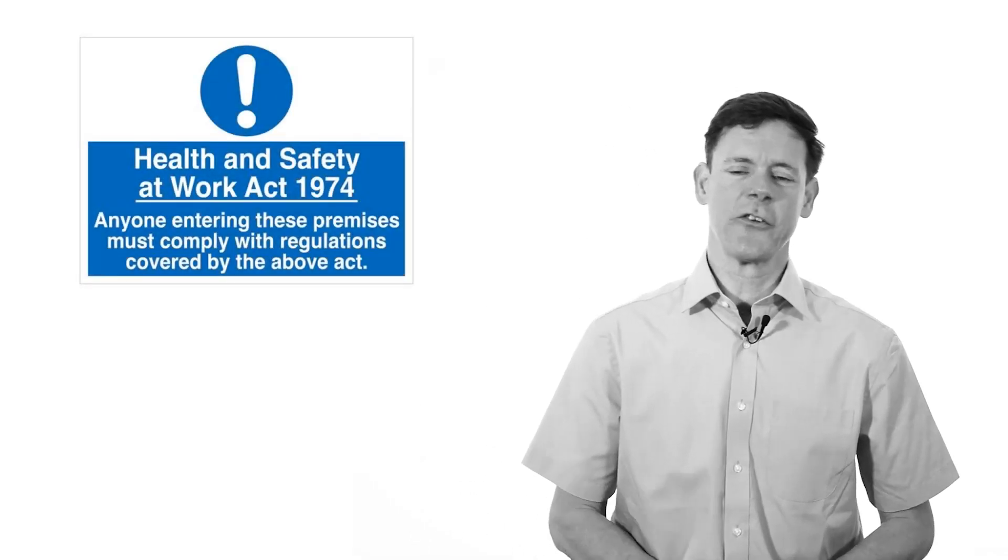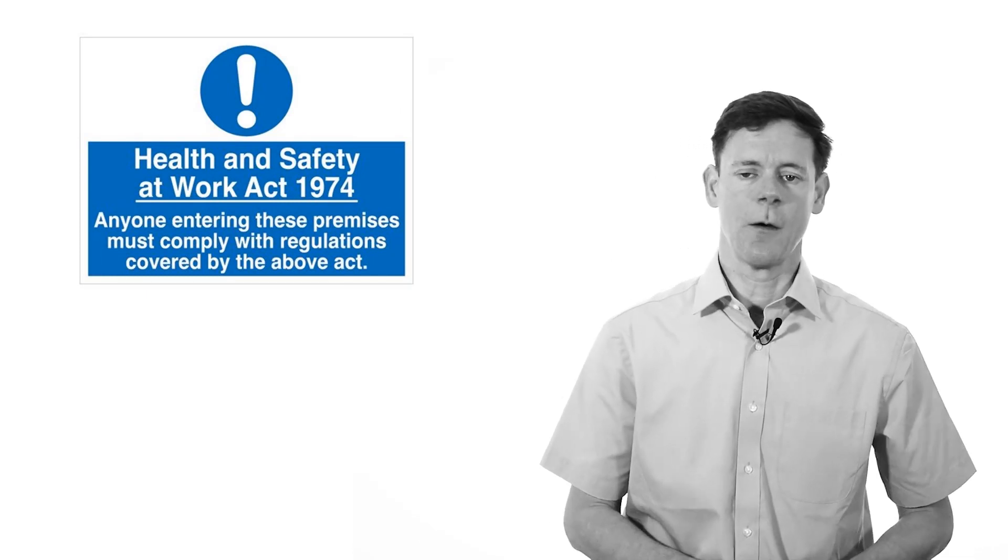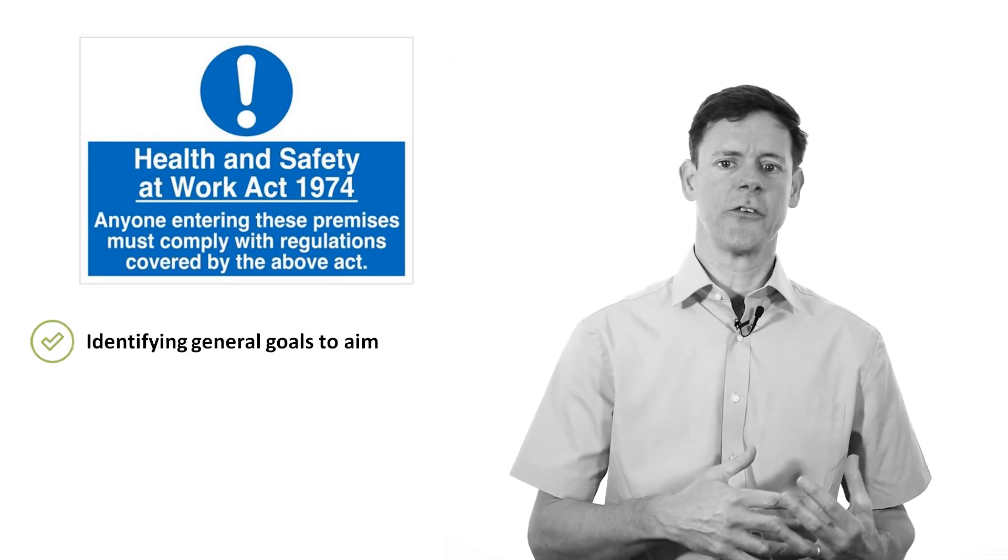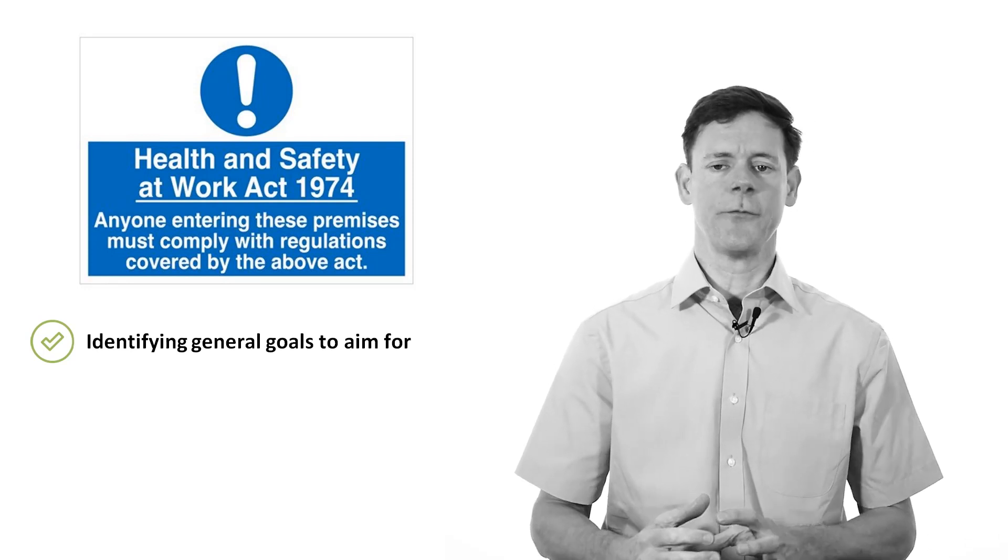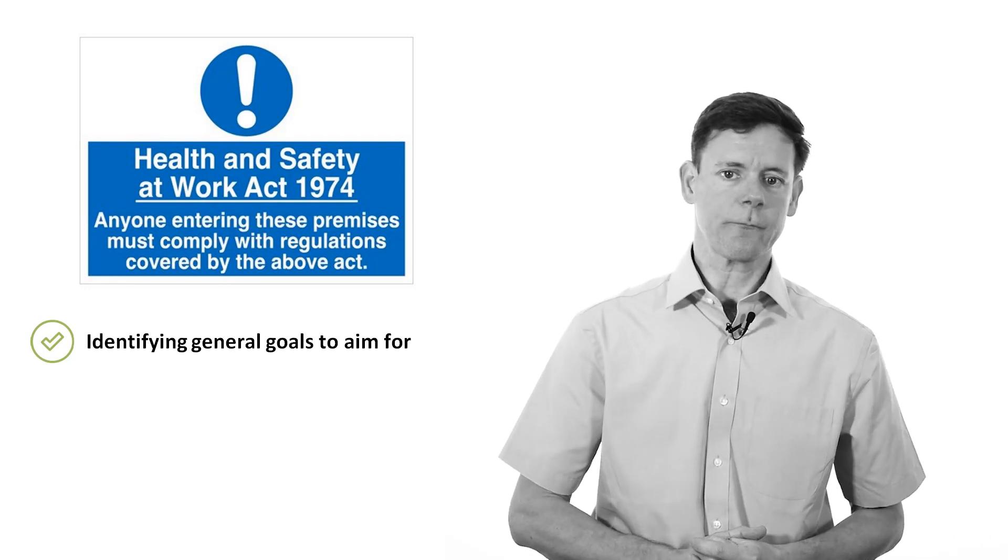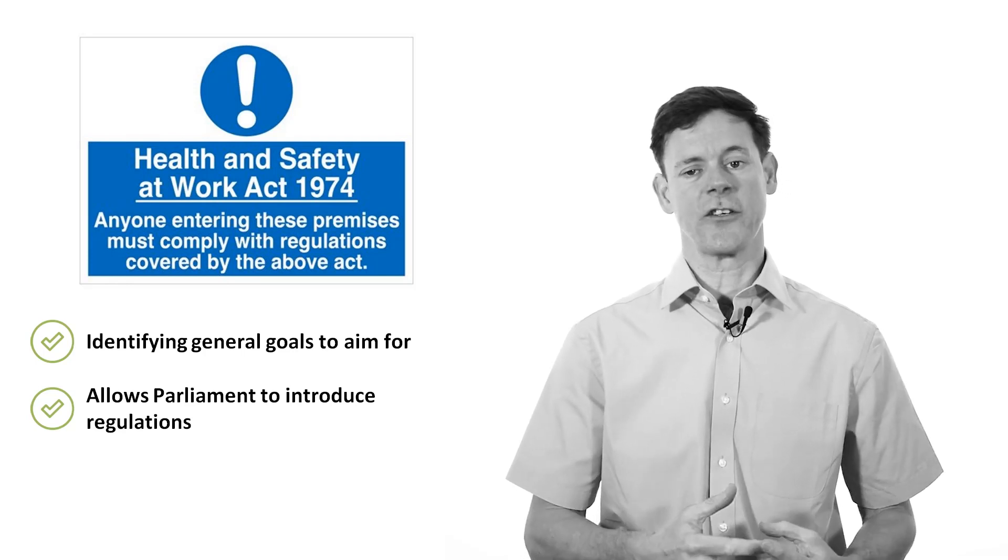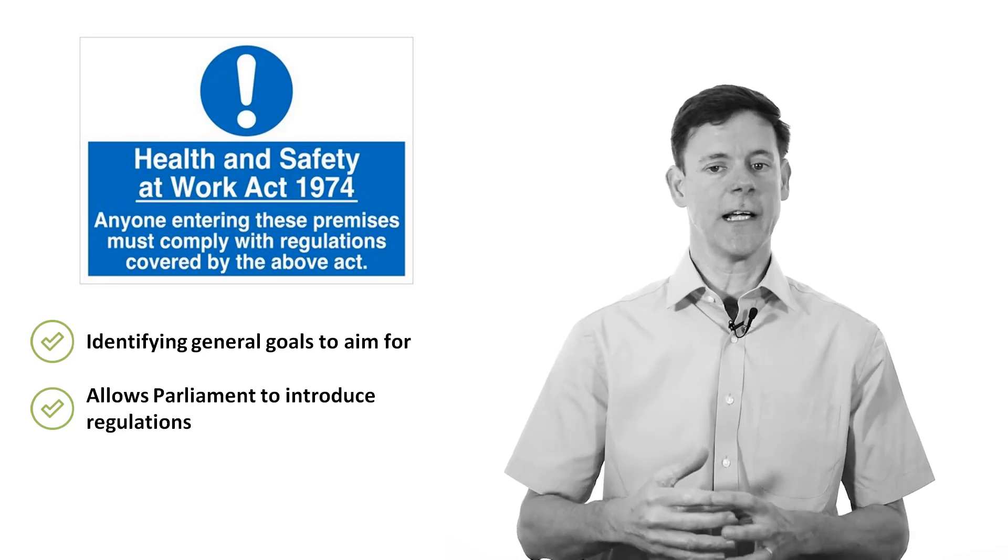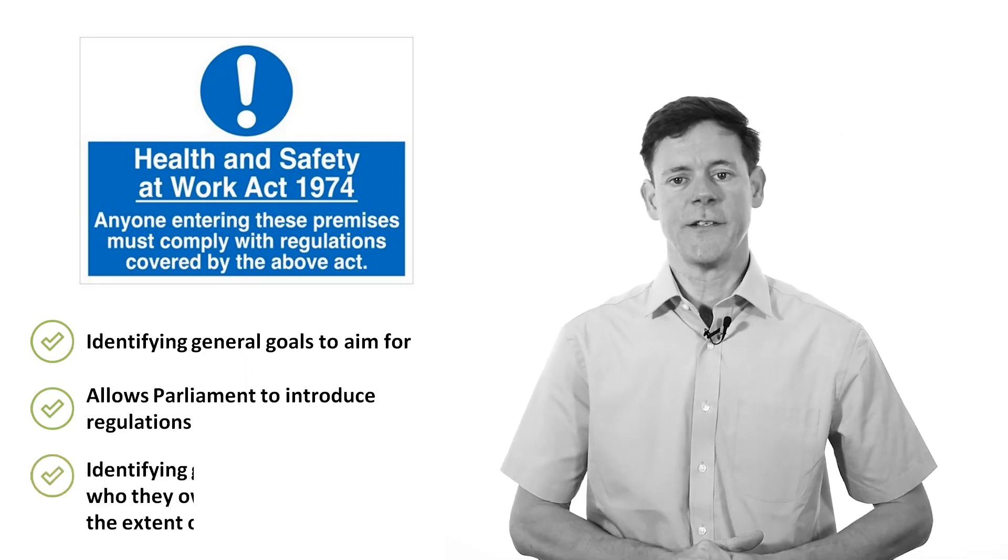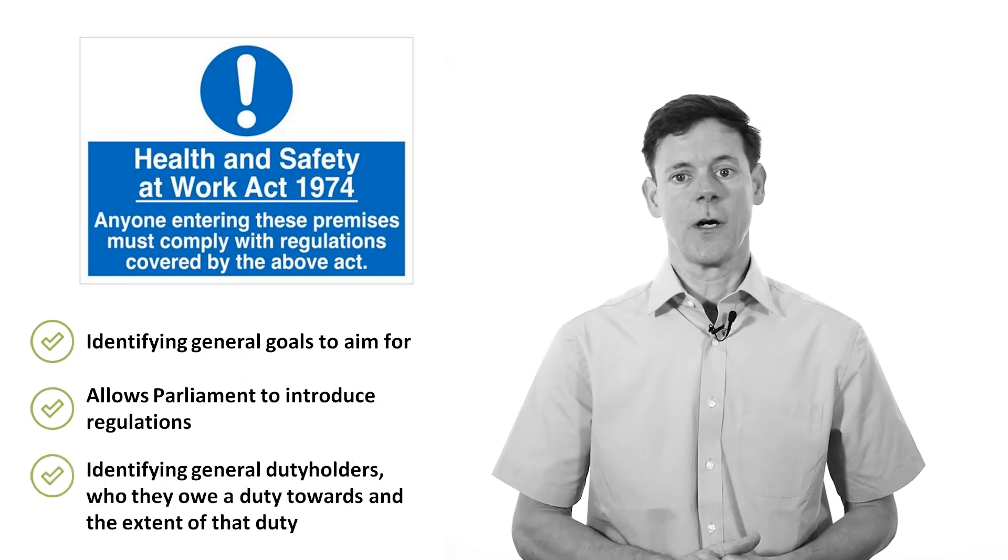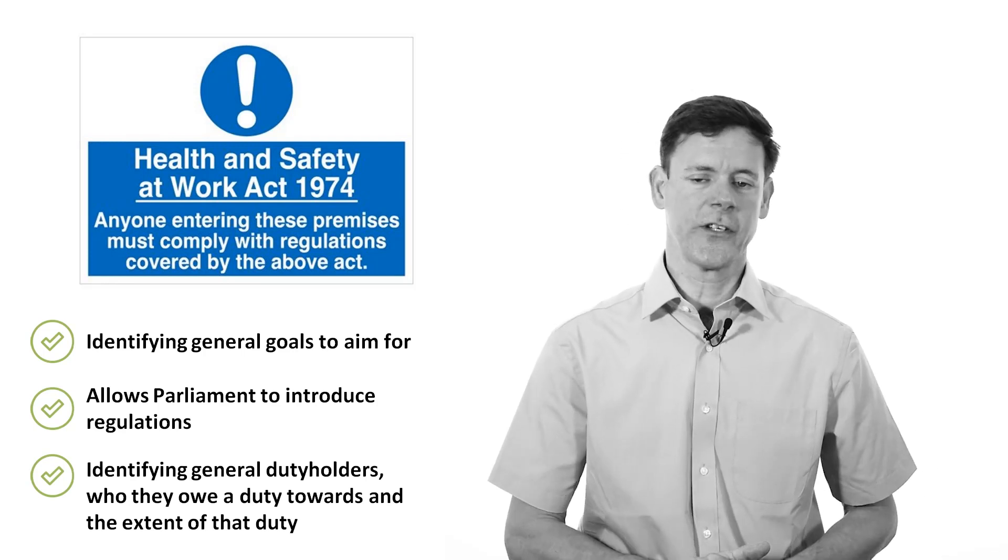The Health and Safety at Work Act is the principal piece of statute law governing health and safety standards in workplaces. The Act works by recognising general aims to be achieved. It sets general goals. What it doesn't provide is a lot of technical detail. The Act then allows for Parliament to introduce regulations which actually achieve the aims of the Act. The regulations set out the technical detail. The Act works by identifying general duty holders, identifying the groups of people that they owe duty towards, and it identifies the extent of that duty.